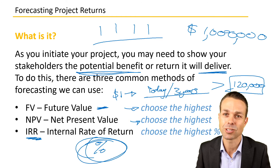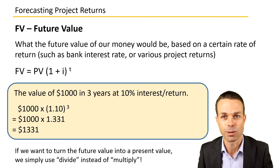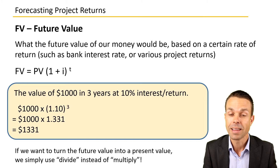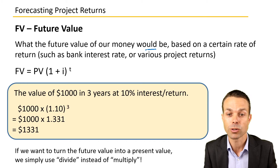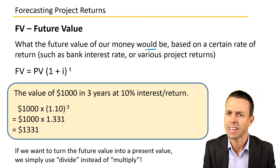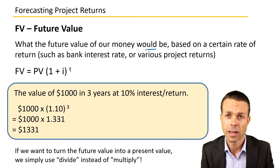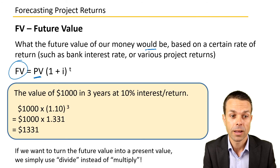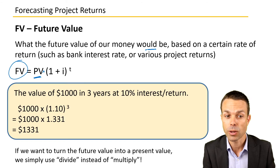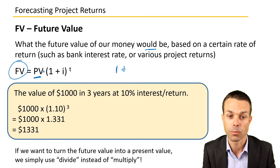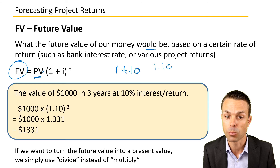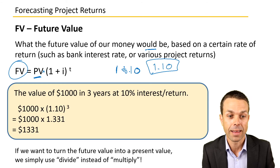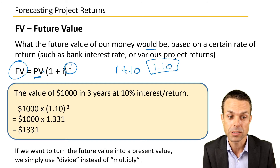Future Value is what our money would be worth based on a certain rate of return, like an interest rate of 5% or 10% per year. The formula is: Future Value equals Present Value multiplied by (1 + interest rate) to the power of time. For example, at 10% interest, that's 1.0 plus 0.10, giving us 1.1, raised to the power of the number of years.